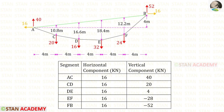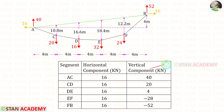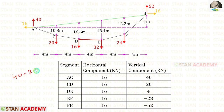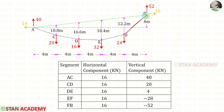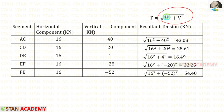Now we are going to find the tension in all of the segments. For all segments the horizontal component equals the horizontal thrust, 16. We only need to find the vertical component. For AC it is 40. For CD it is 40 minus 20, giving 20. For DE it is 40 minus 20 minus 16, giving 4. For EF it is 40 minus 20 minus 16 minus 32, giving minus 28. For FB it is minus 52. Using the tension formula, we can find the tension in all segments. Thank you for watching this video. Bye-bye.